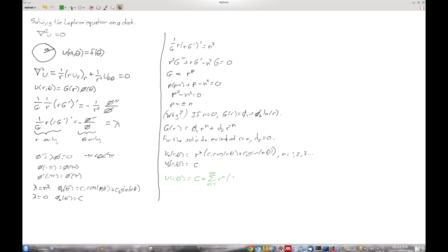And then I'll call this cn cosine of n theta plus dn, I'm going to use d here because we're going to index things by n, sine n theta.